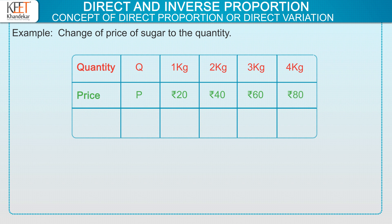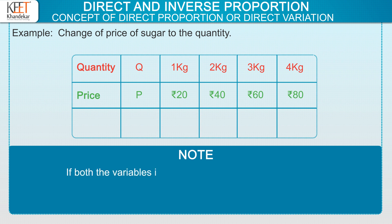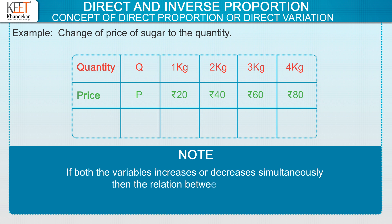If we increase the quantity Q, the price P also increases. And if we decrease the quantity Q, the price P also decreases. Note, if both the variables increase or decrease simultaneously, then the relation between the variables is called direct proportion or direct variation.